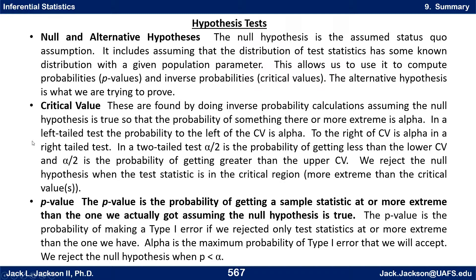We always have a null and alternative hypothesis for hypothesis testing. The null hypothesis is the assumed status quo — it assumes that the distribution of test statistics has some known distribution with the given population parameter, which allows us to compute probabilities, p-values, and critical values. The alternative hypothesis is what we're trying to prove. The null hypothesis is always stated with an equal-to statement like mu equals a certain number, whereas the alternative uses less than, greater than, or not equal to.